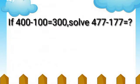If 400 minus 100 is equal to 300, solve 477 minus 177. Write three subtraction problems with the answer 200.